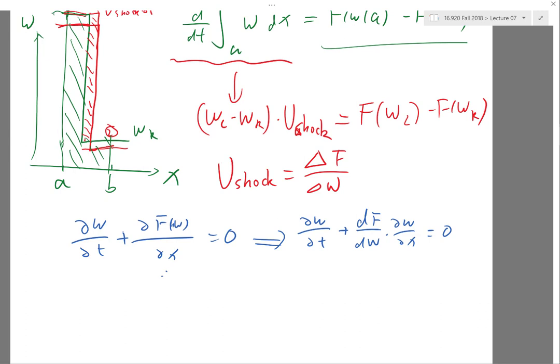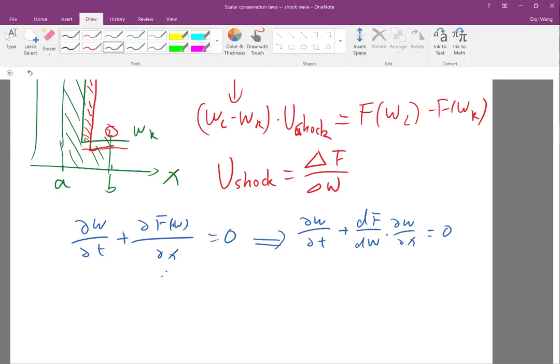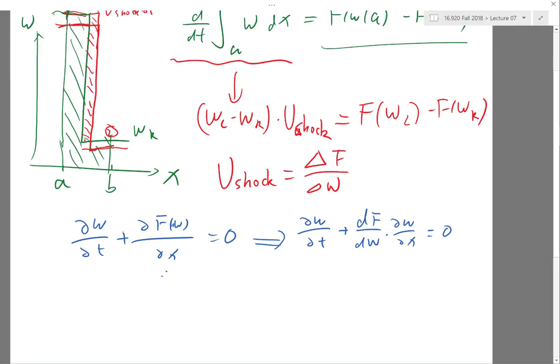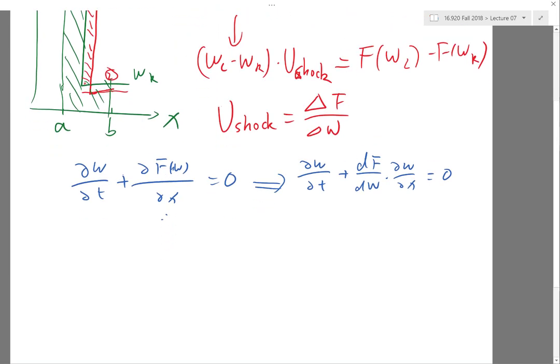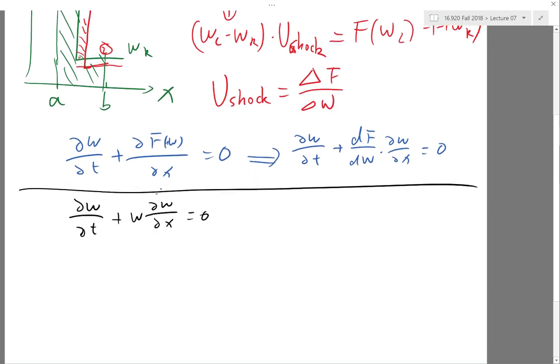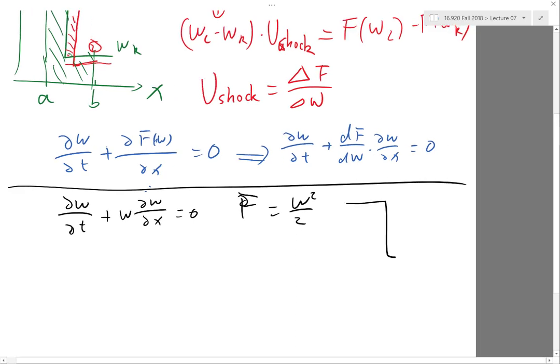All right. Just to end this discussion of shocks and stuff, I want to just illustrate once more how ridiculous it is to use the differential form to solve equations with shock waves. Okay. Suppose we have the original Burgers equation. All right. So, we know that we have f actually equal to w squared over 2, right?